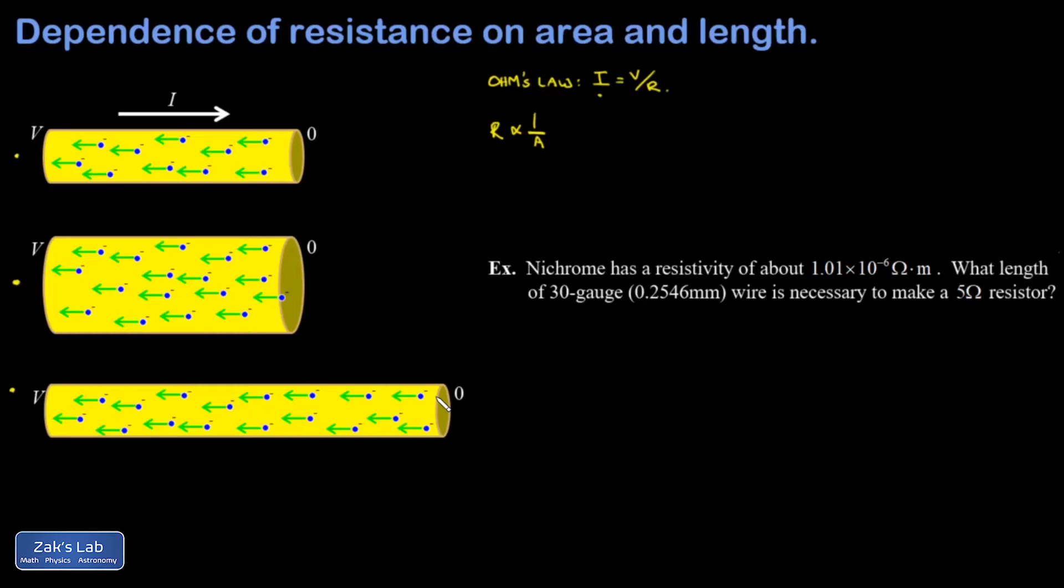Now that these electrons are moving slower, they're carrying less charge per second through the conductor. Looking at Ohm's law, if the current went down, it means the resistance went up, and we obtain our second proportionality.